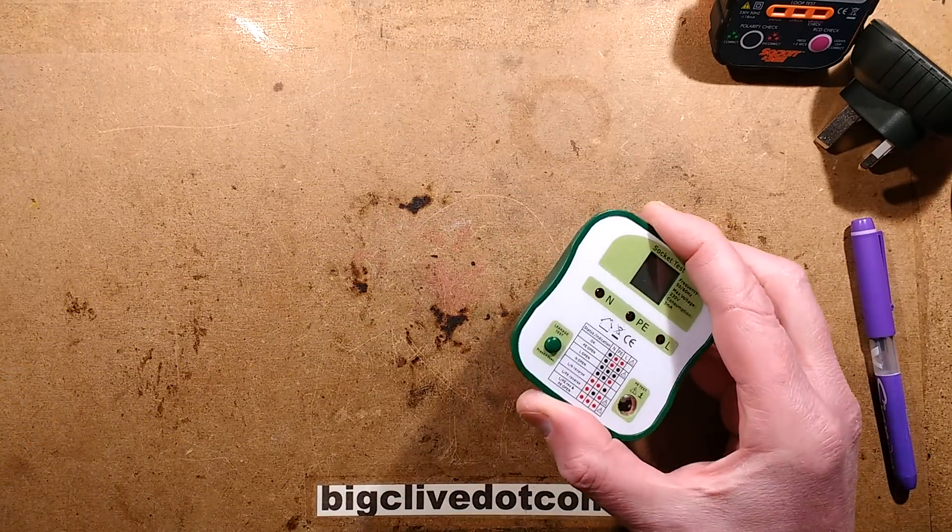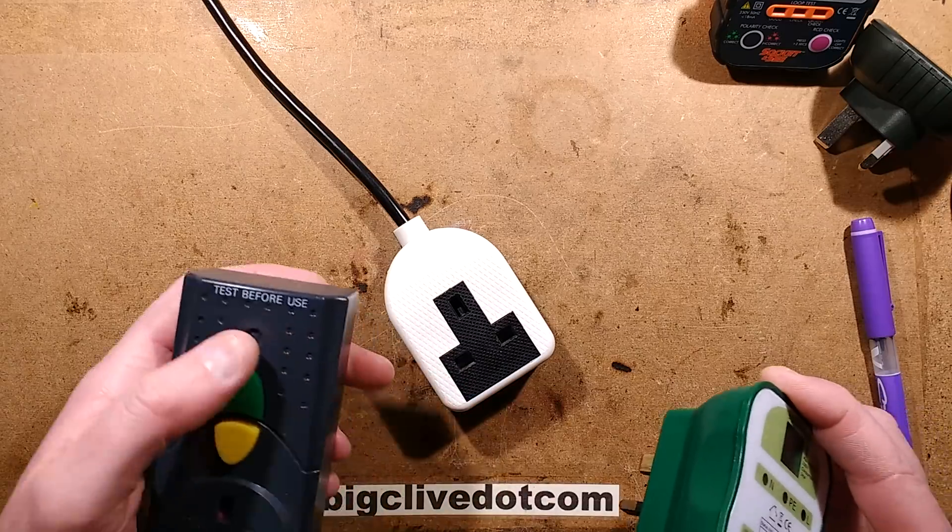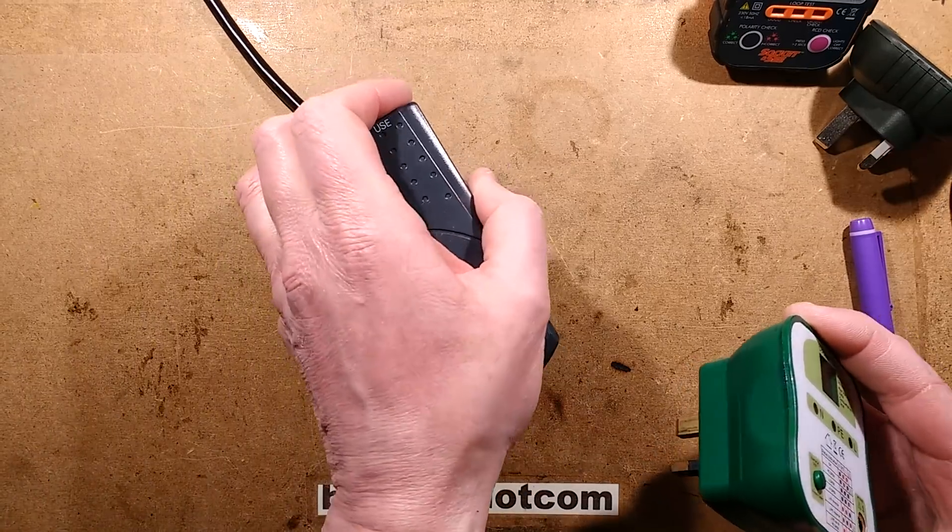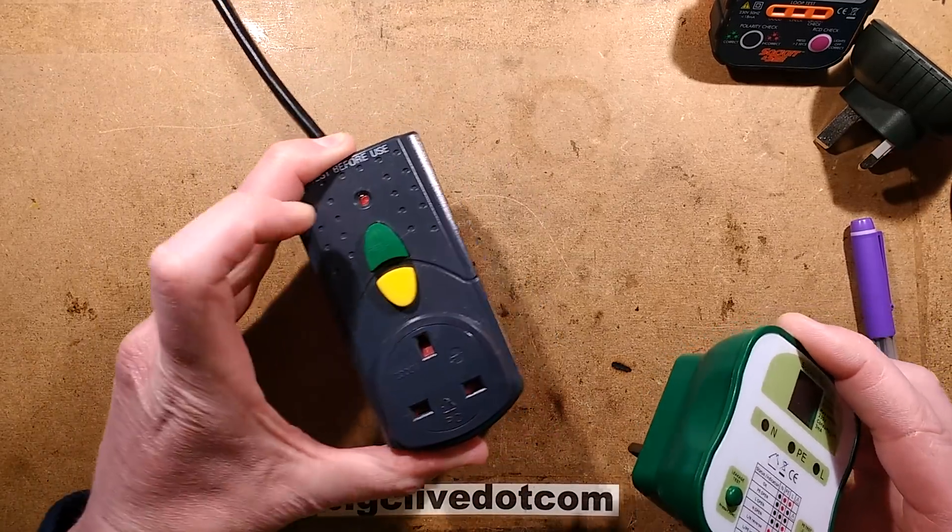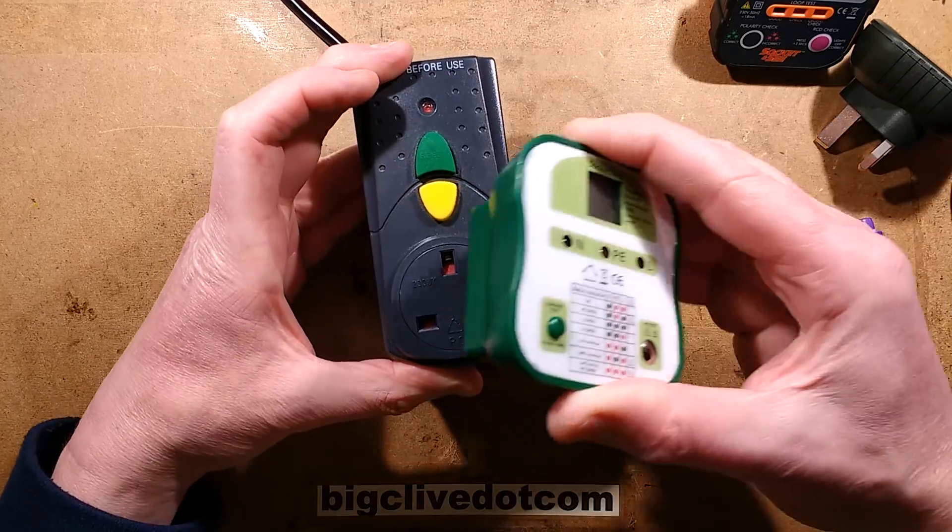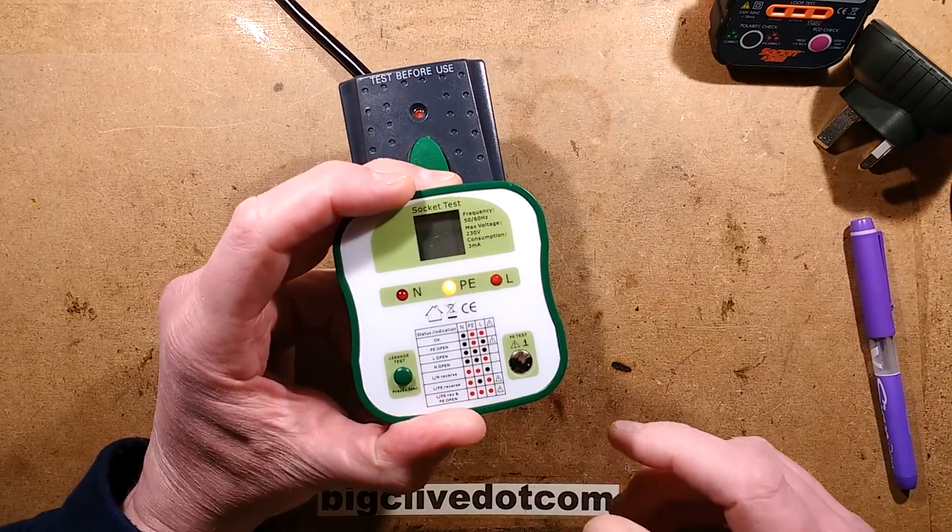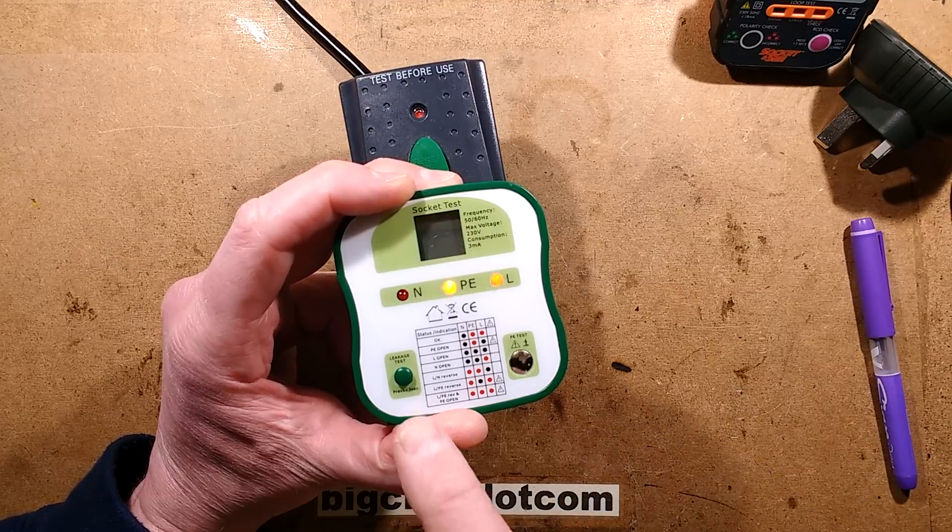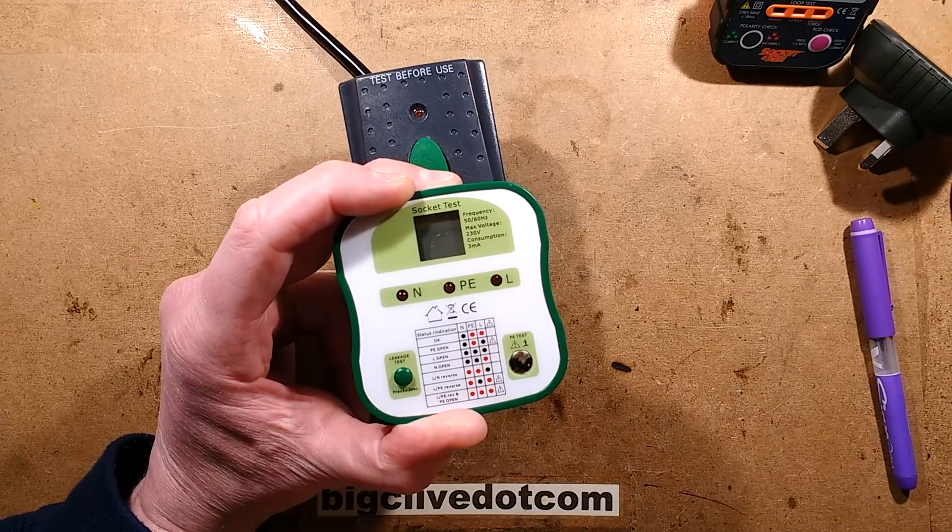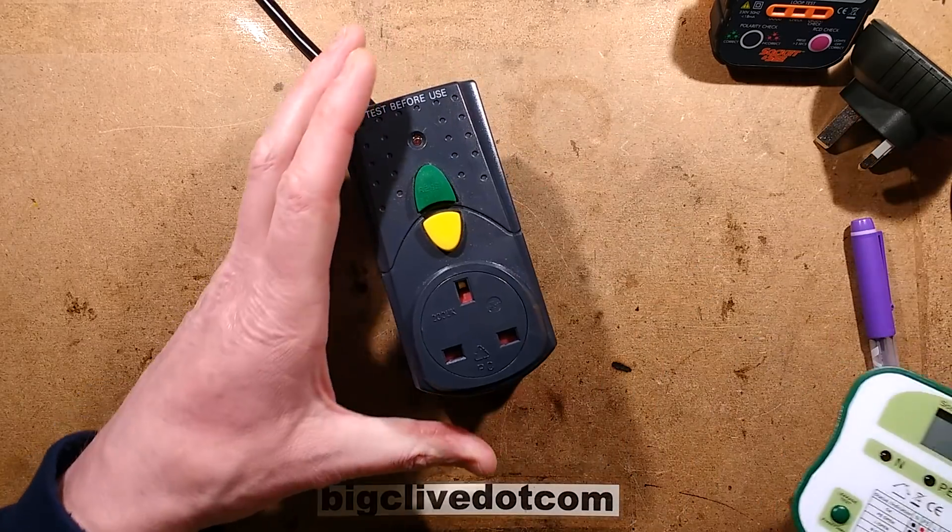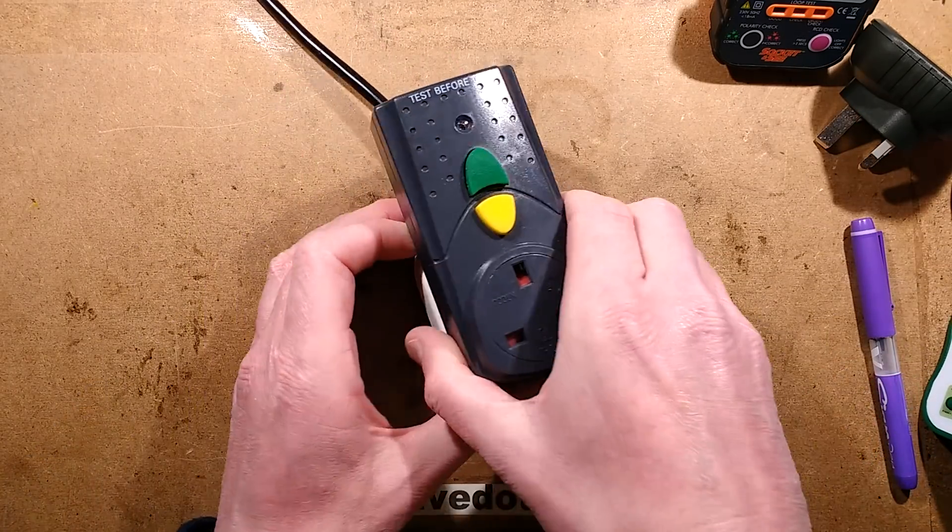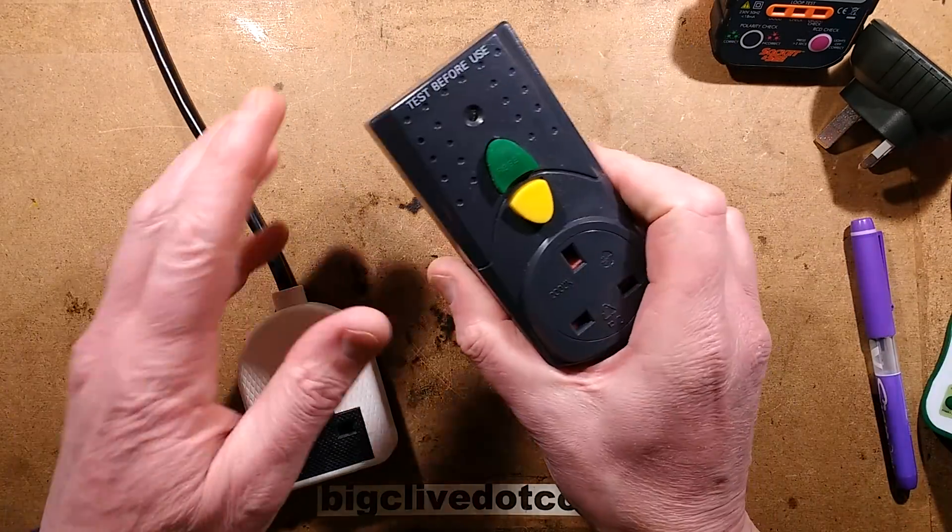I've got another test I can do with this. I shall do the earth leakage test. So if I plug this into an RCD, residual current device, otherwise known as a GFI, and I press the test button, it kills the power. I've got a slight lag on my main RCD to avoid it tripping, so I can trip locally with one of these.